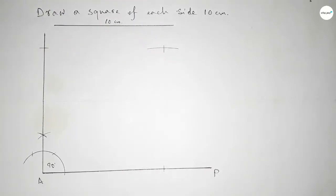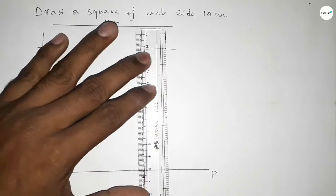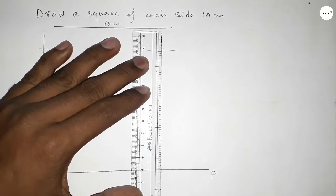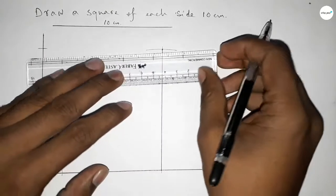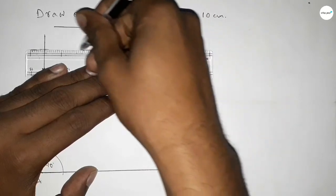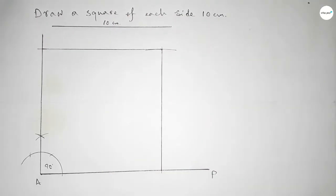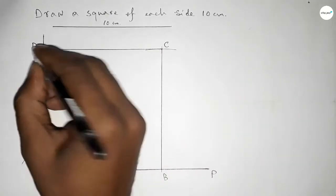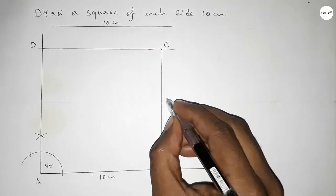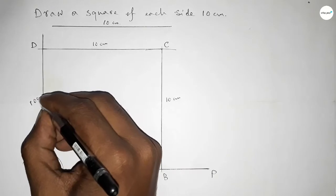Both curves intersect at a point. Joining this side, then joining this side to get the square of each side length 10 centimeter. Labeling the points: B, C, and D. Each side measures 10 centimeter.